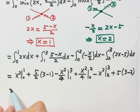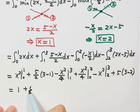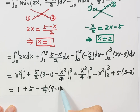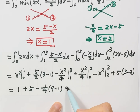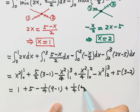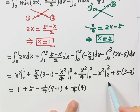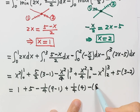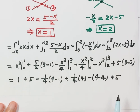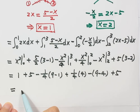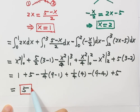Simplifying each part: the first is 1; the second is 5; then 1 over 4 times (9 minus 1); then 1 over 4 times 4; then 9 minus 4; then 5. After simplifying everything, the final answer is 5. Thanks for watching — see you next time.